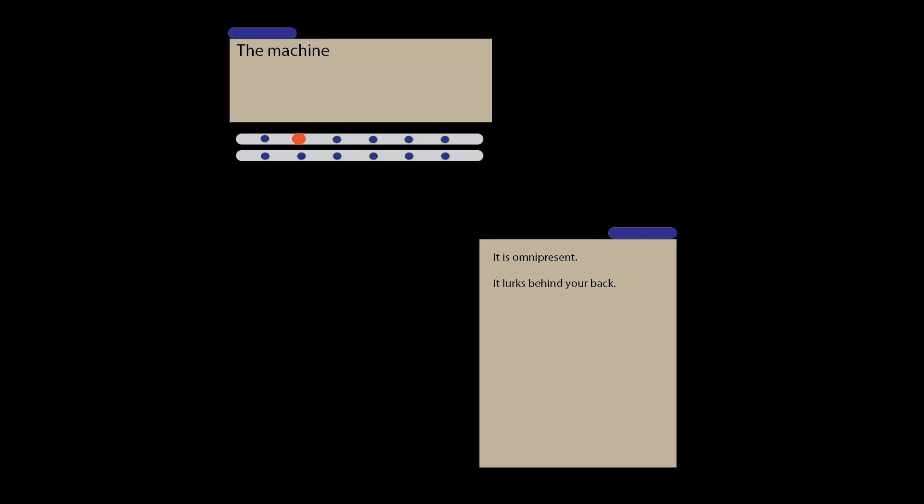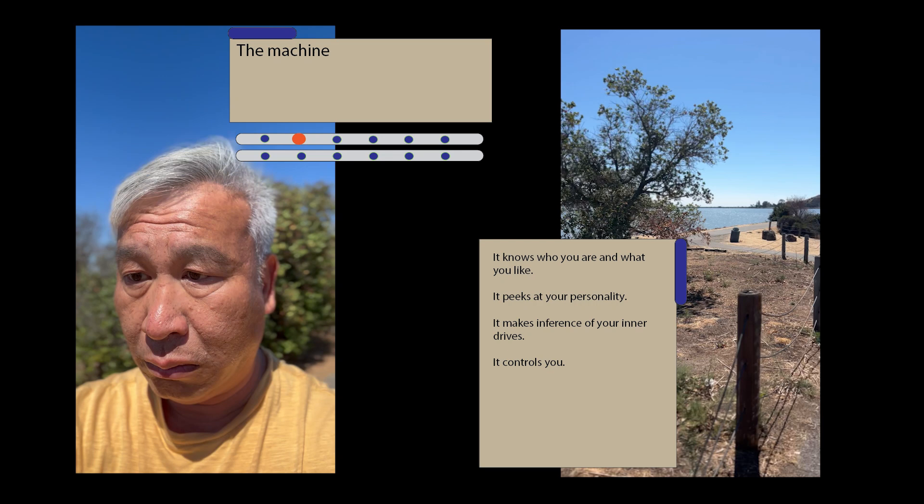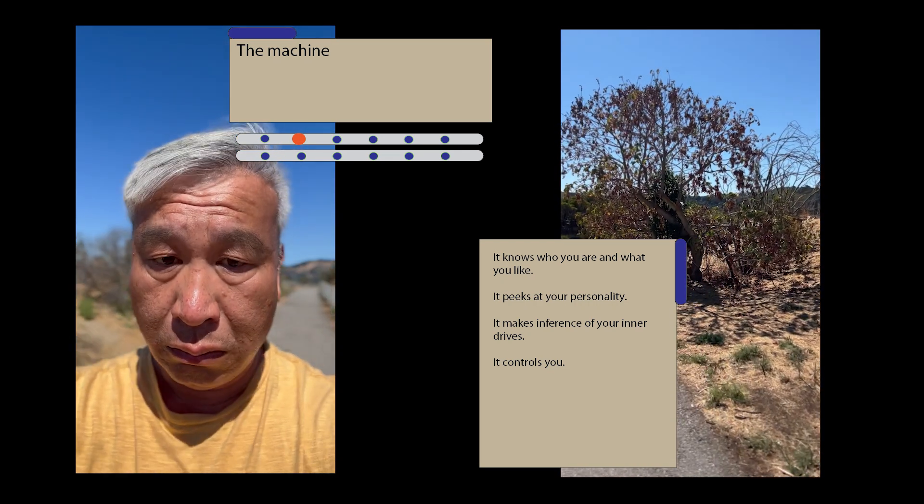It is omnipresent. It lurks behind your back. It knows who you are and what you like. It peeks at your personality. It makes influence of your inner drives. It controls you.